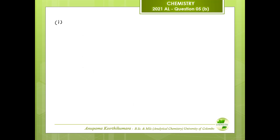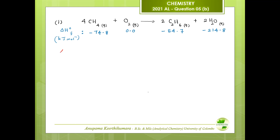For question one, the standard enthalpy change of the reaction equals sigma standard enthalpies of products minus sigma standard enthalpies of reactants. When substituting values into this equation, you have to be careful with the coefficients in the balanced chemical equation, because you need to multiply the standard enthalpy change of formation by the coefficient.